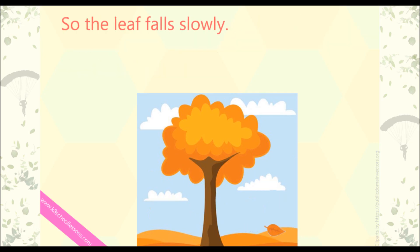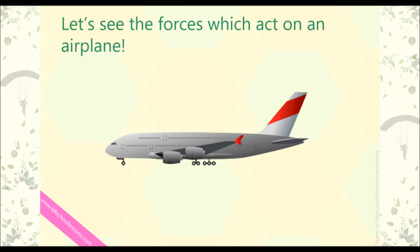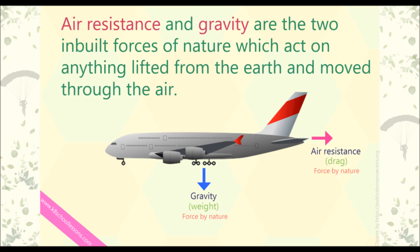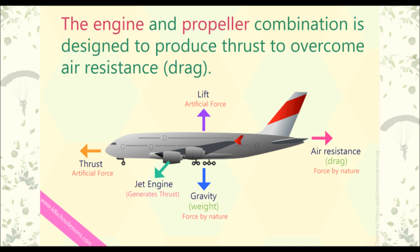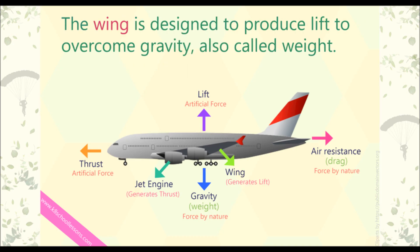The leaf falls slowly. Let's see the forces which act on an aeroplane. Air resistance and gravity are two inbuilt forces of nature which act on anything lifted from the earth and moving through the air. Thrust and lift are created artificially to overcome air resistance and gravity in order to enable an aeroplane to fly. The engine and propeller combination is designed to produce thrust to overcome air resistance. The wing is designed to produce lift to overcome gravity, also called weight.